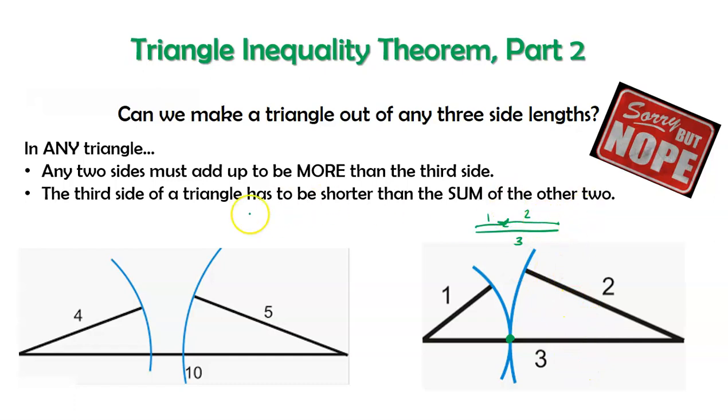In other words it doesn't meet this criteria. If I take 3 and 1 that adds up to 4, bigger than 2, fine. 3 and 2 adds up to 5 which is bigger than 1, fine. But it fails right here. 1 and 2 don't add up to be bigger than 3. They just add up to 3. So it has to be bigger.